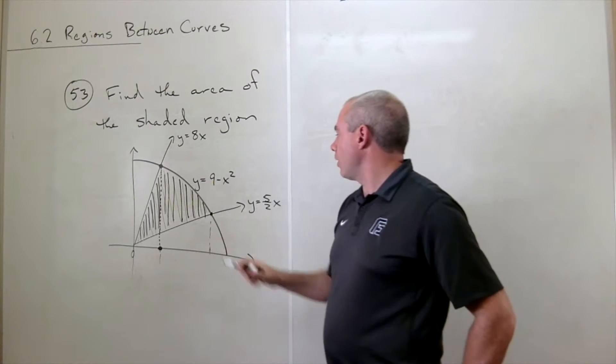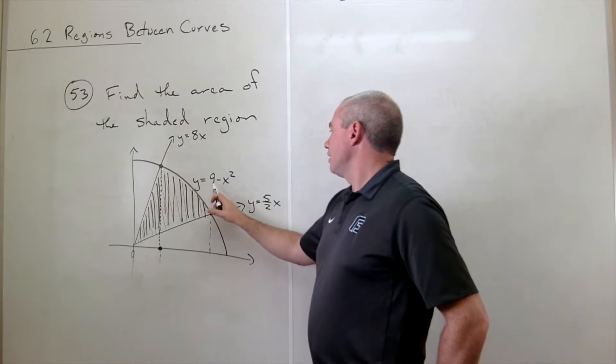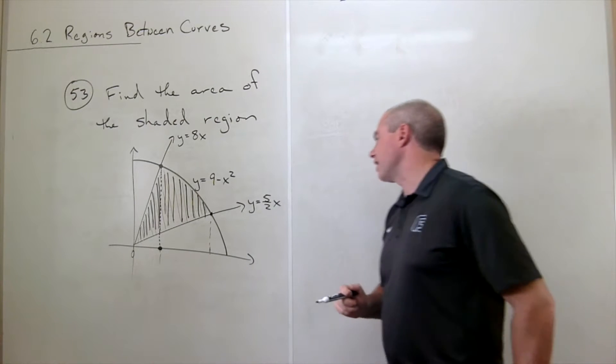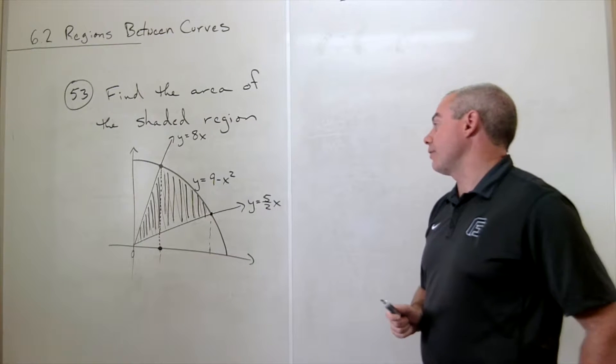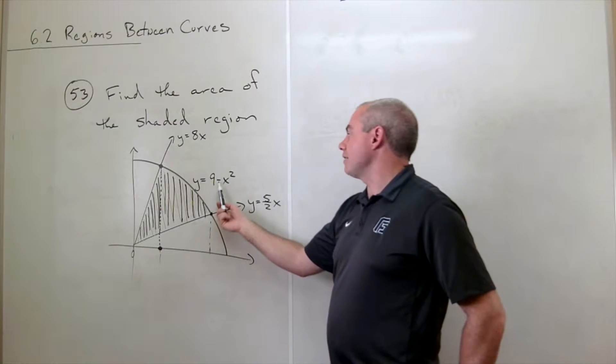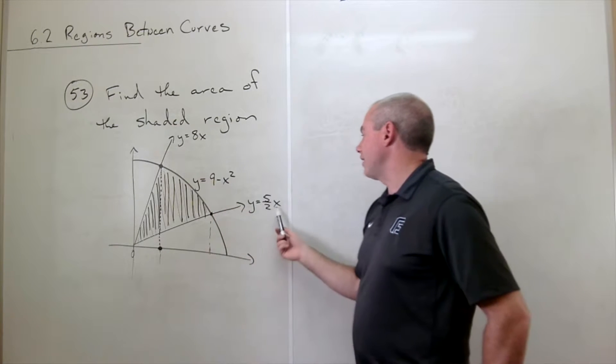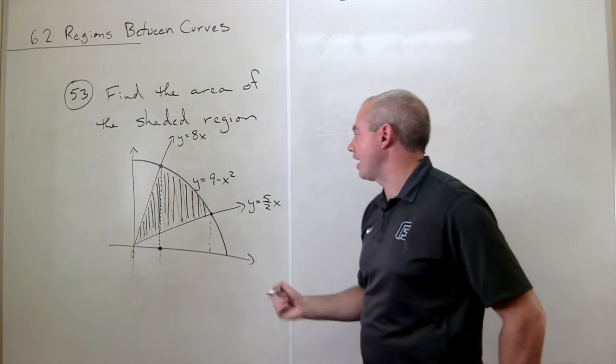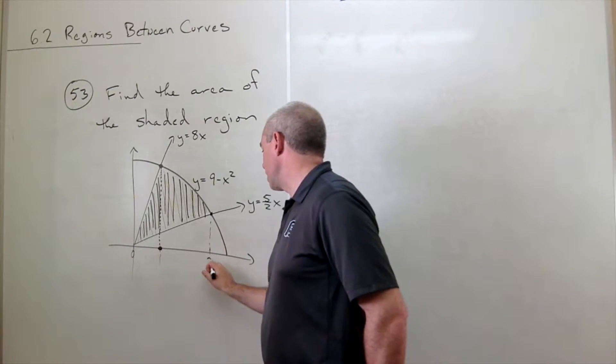And then here, where is 9 minus x squared equal to 5 halves x? What if we plugged in 2? We'd get 9 minus 4, which is 5. If we plugged in 2 to 5 halves x, we'd get 5 halves times 2, which is 5. So 2 gets the job done here.